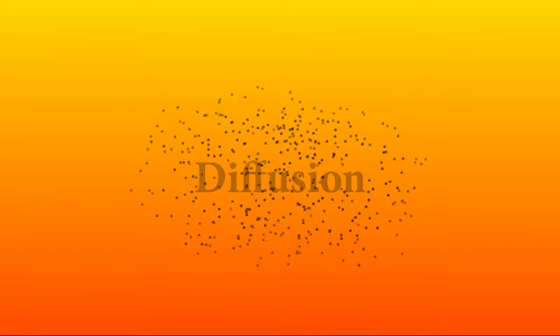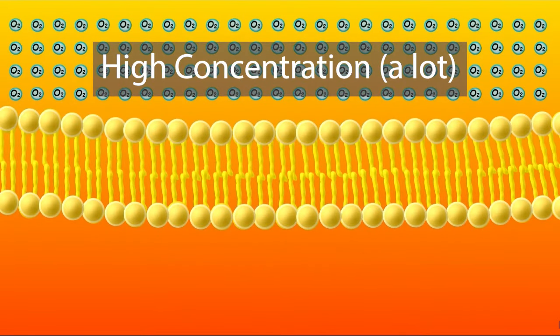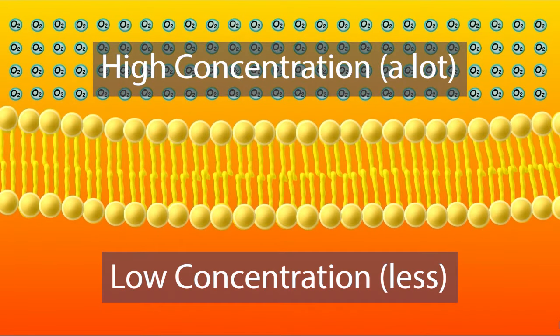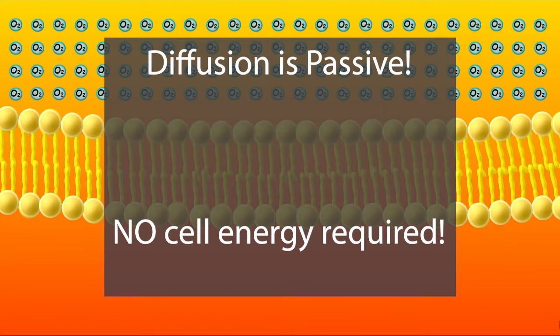One of the most important processes in biology is diffusion, the movement of particles from high concentration to low concentration. This process is passive, meaning that no energy is used by the cell to make it happen.